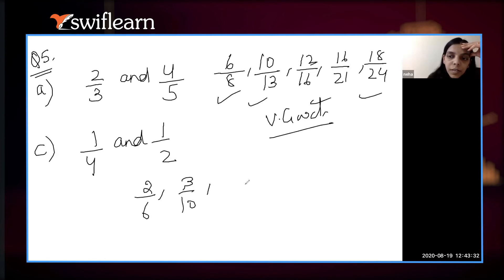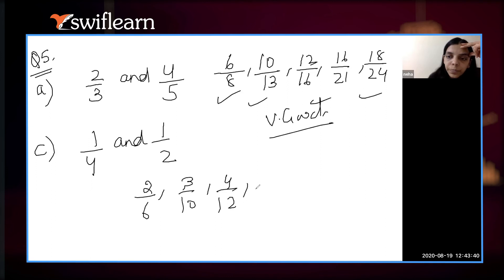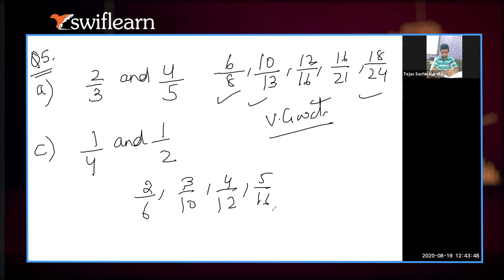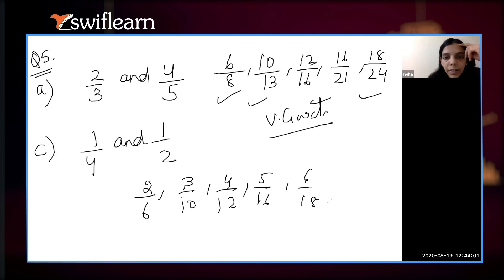Correct. 1 upon 2 plus 3 upon 10 is equal to 4 upon 12. Very good. 1 upon 4 plus 4 upon 12 is equal to 5 upon 16. Correct. 1 upon 2 plus 5 upon 16 is equal to 6 upon 18. That's correct.